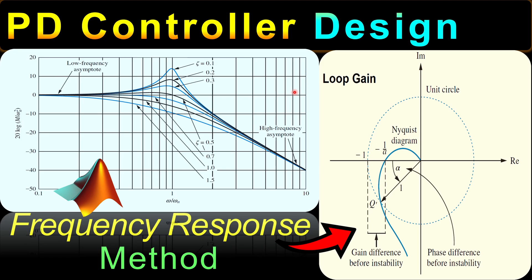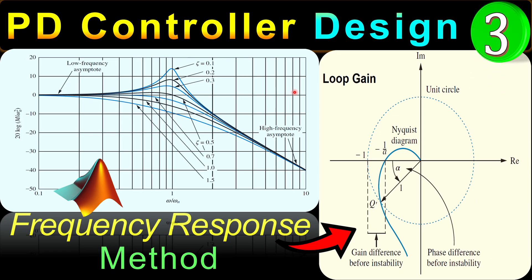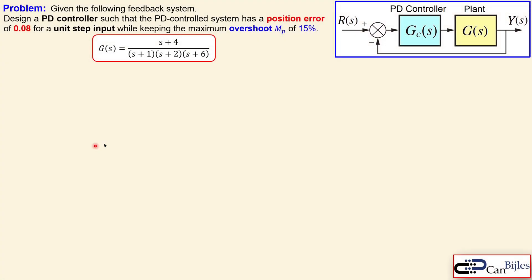Welcome to a new video about controller design — this is example number three. I will again discuss the frequency response method for PD controller design, working through calculations step by step and verifying using MATLAB simulations. We have a feedback system with a plant transfer function G(s) having one zero and three poles — a third-order system. We would like to design a PD controller such that the system has a position error of 0.08 for a unit step input and a maximum overshoot of 15 percent.